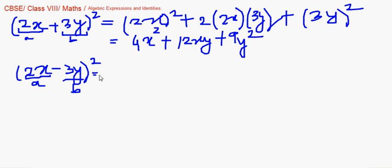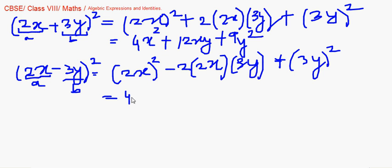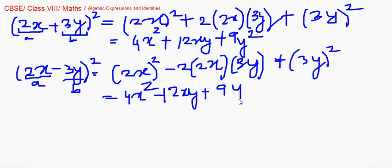On the other side, (2x − 3y) whole square will be expanded using the second identity: (2x) squared minus 2 times 2x times 3y plus (3y) squared, giving us 4x squared minus 12xy plus 9y squared. Note: I had mistakenly written a plus sign earlier, but it should be minus.